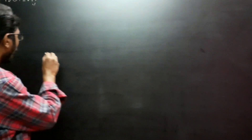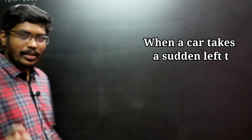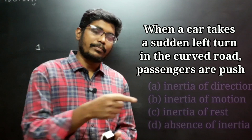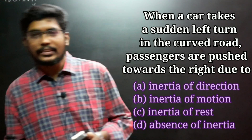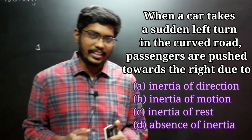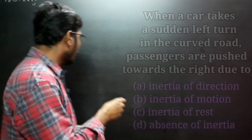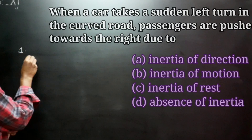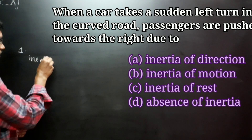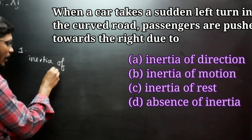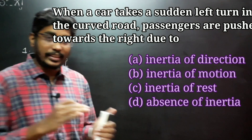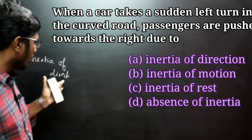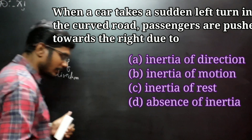First question: If a car turns left and you are traveling in the car, you go to the left. What is the reason? Due to inertia of direction. The categorization is inertia of direction.